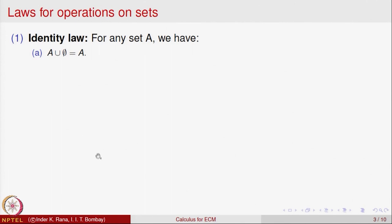These are also called laws. That means if you take any set A and take its union with the empty set, then it is A itself. That is quite clear because the empty set has no elements, so you are not adding anything to A — it is just A itself.